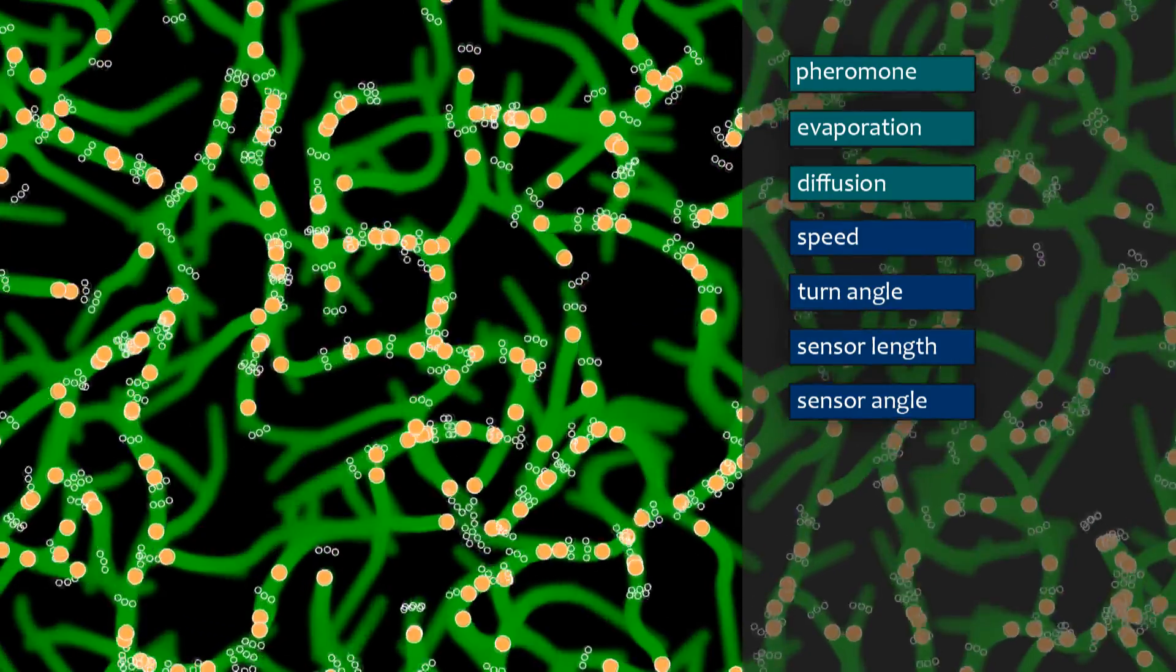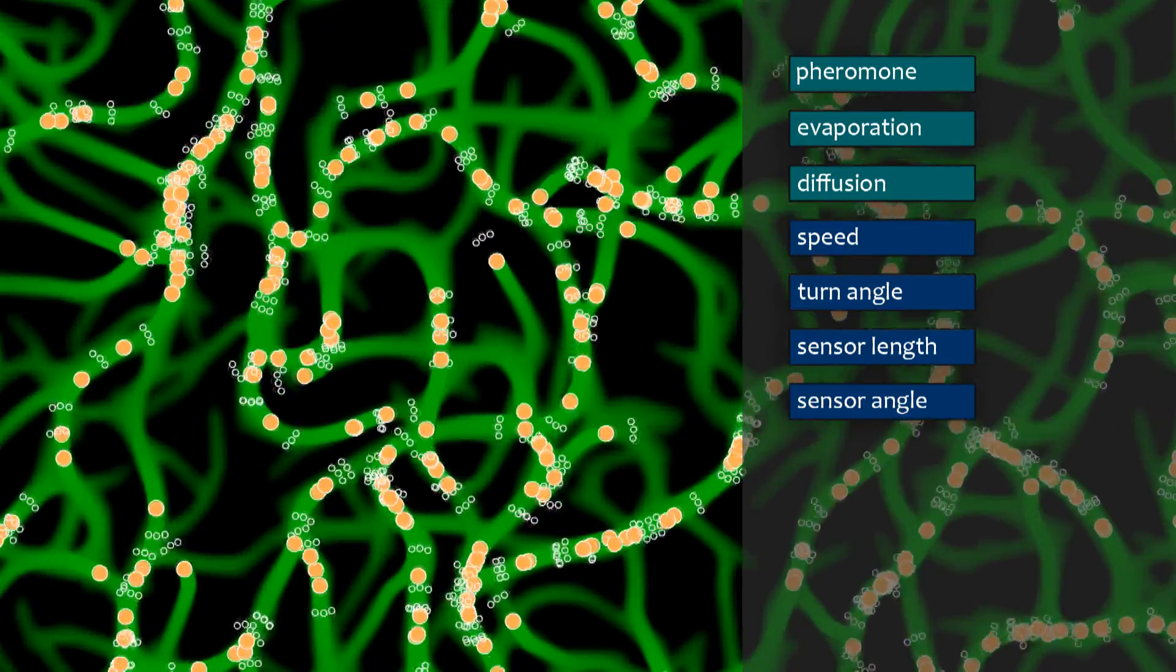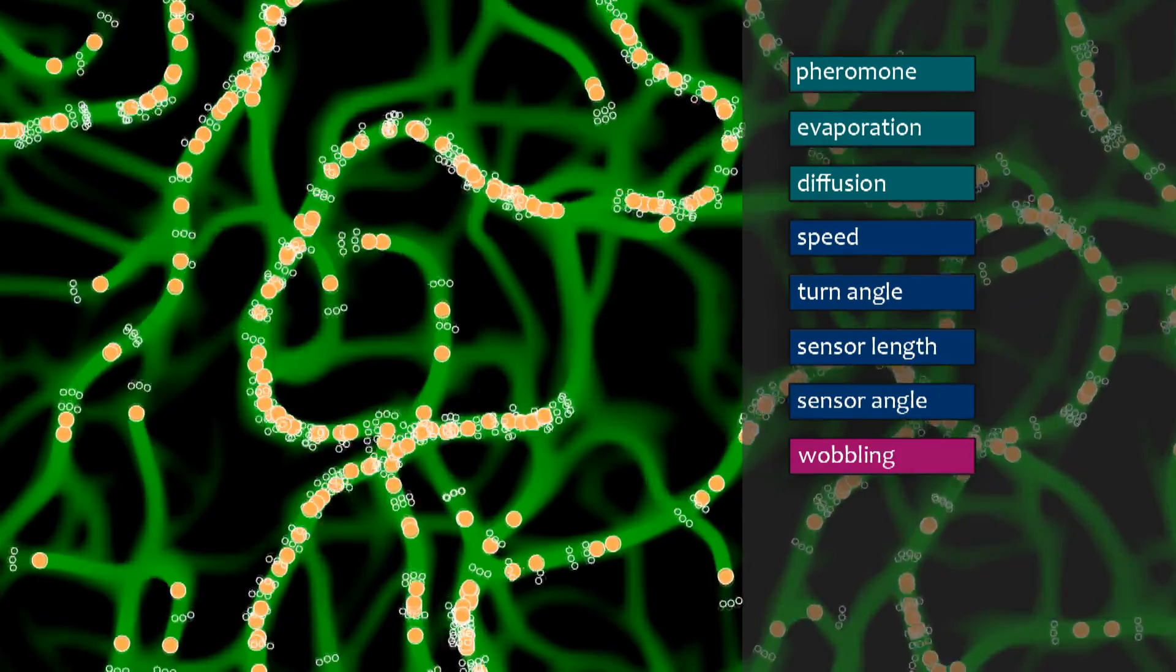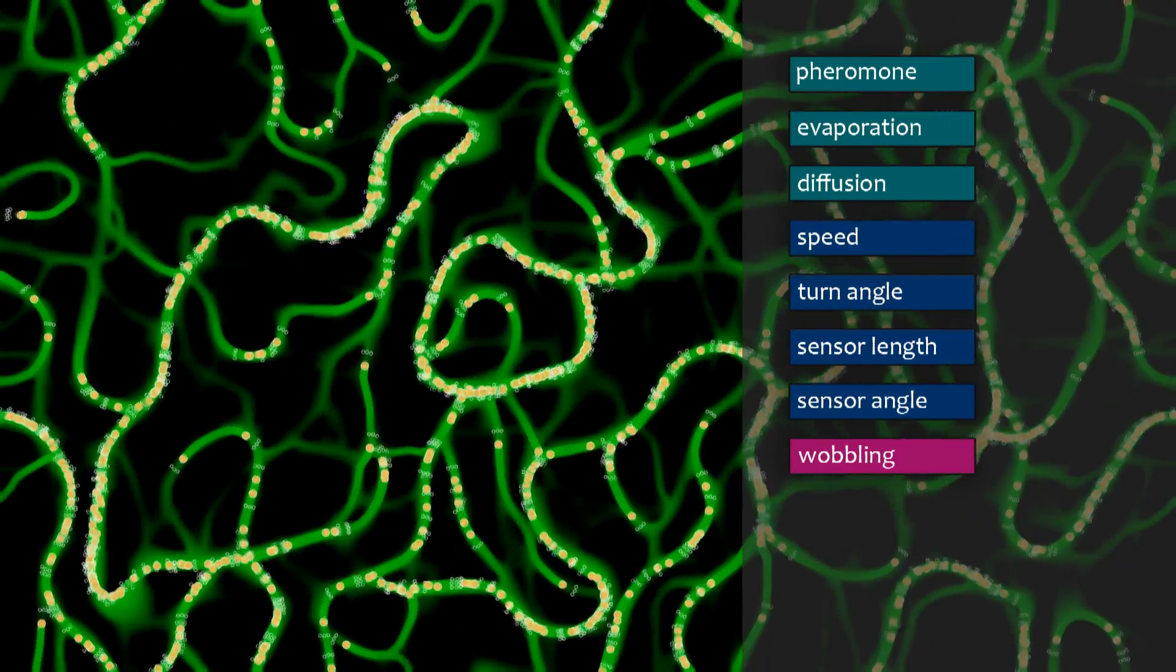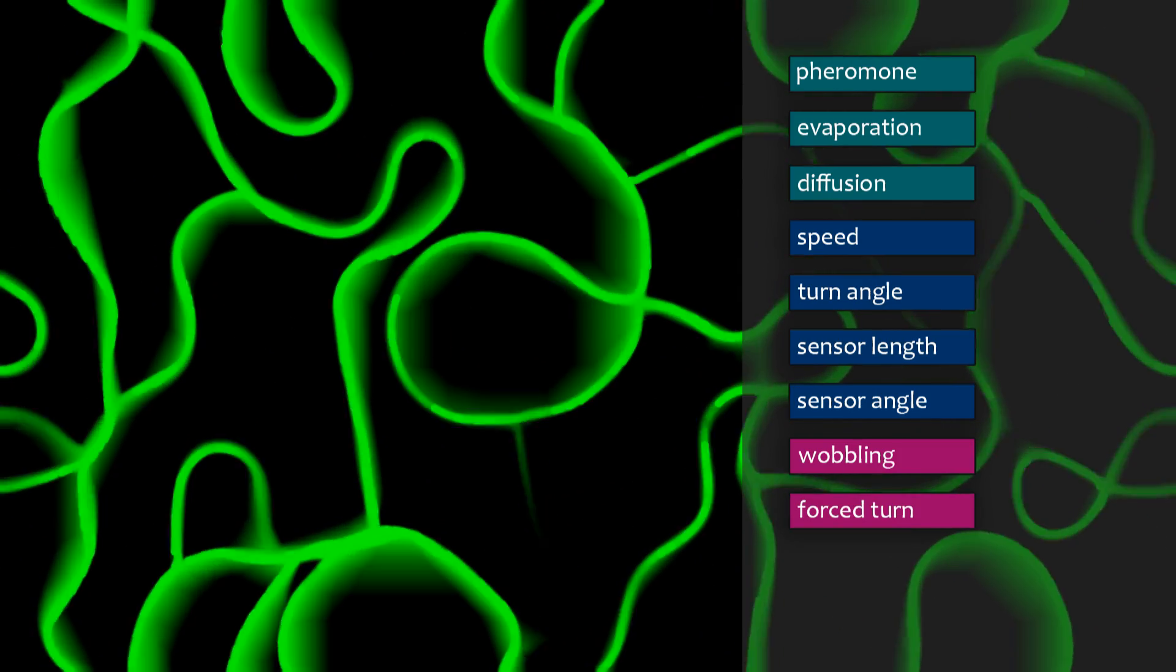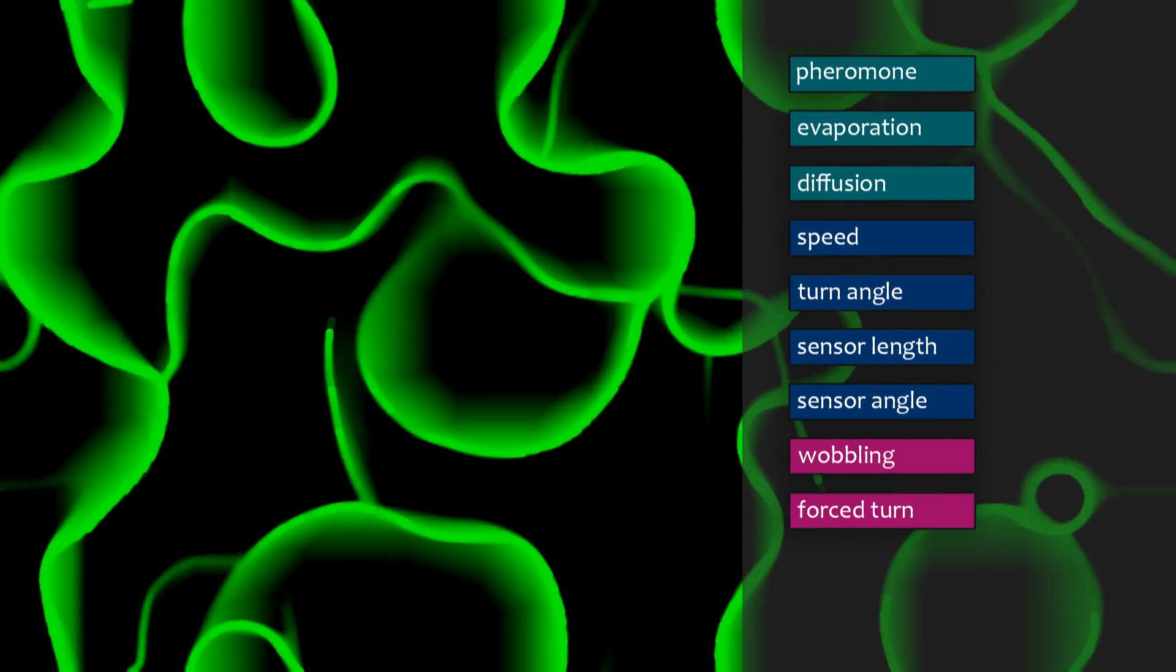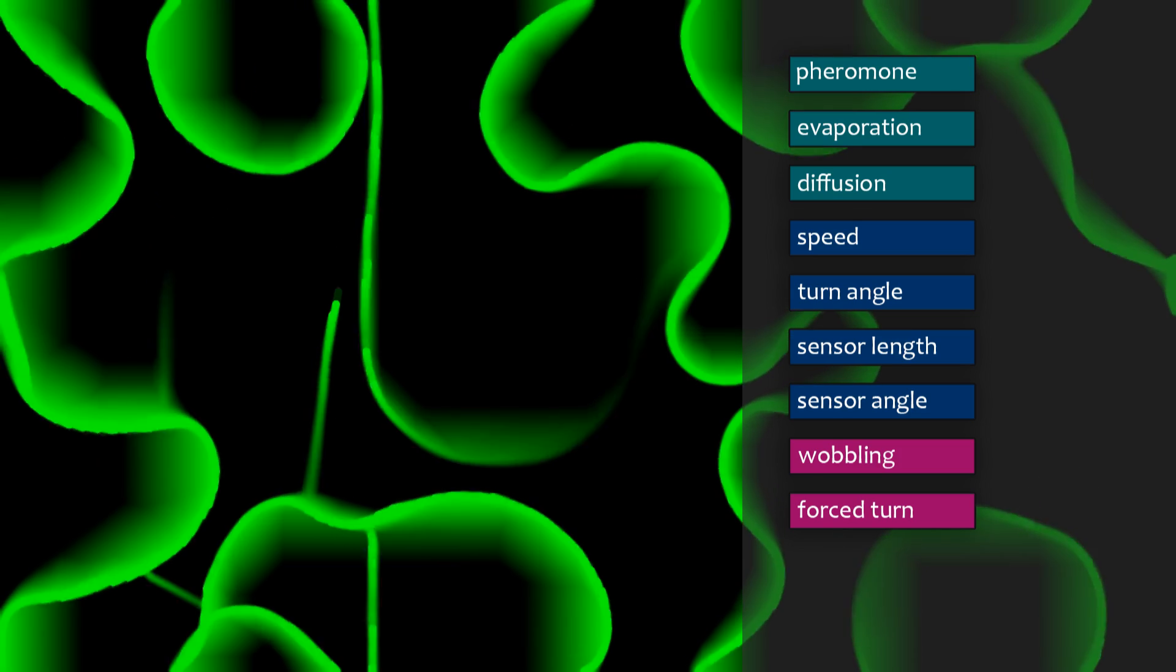Also, in my version, there are other parameters too. Wobbling: the direction of the agent slightly changes randomly with each turn. A forced turn: with each move, a small value is added to the direction of the agent, turning him towards a certain direction.